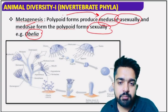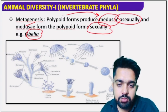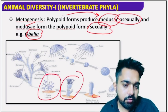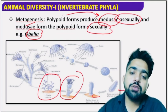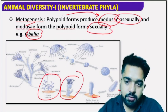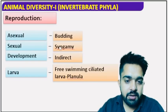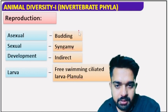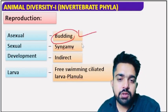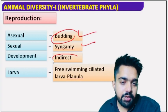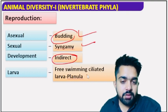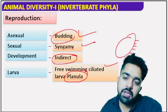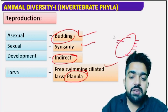Metagenesis refers to the alternation of generation — polyp forming medusa, and medusa forming polyp. This alternation is called metagenesis. An important exam question: which animal shows both polyp and medusa forms? Obelia shows both polyp form and medusa form. In the life cycle: asexual budding produces medusa from polyp; medusa reproduces sexually, forming a zygote, then blastula, then a free-swimming planula larva — ciliated, with cilia-like structures — which settles down and forms a new colony.